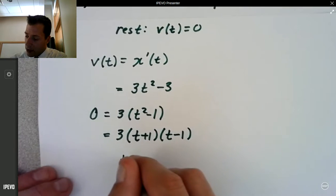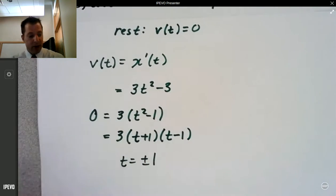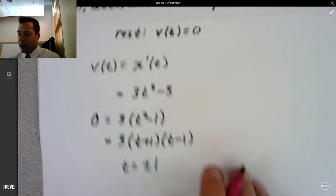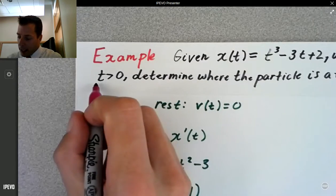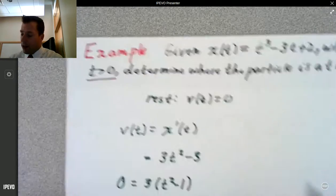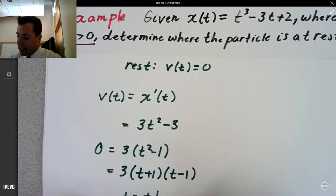So in this case, t equals plus or minus 1. However, what did we say about the domain? t has to be greater than 0, so there's only one answer here. It's at t equals 1.